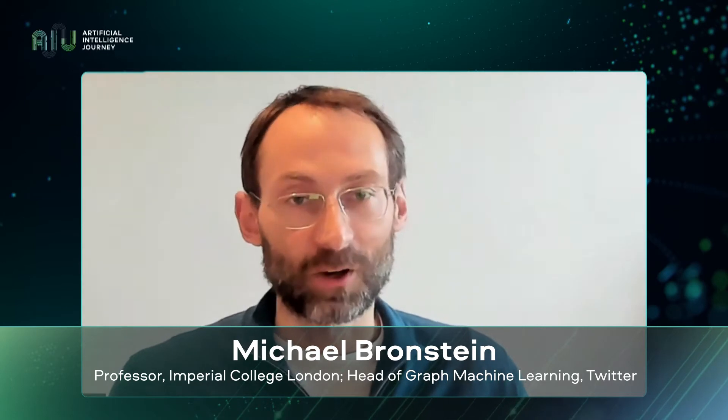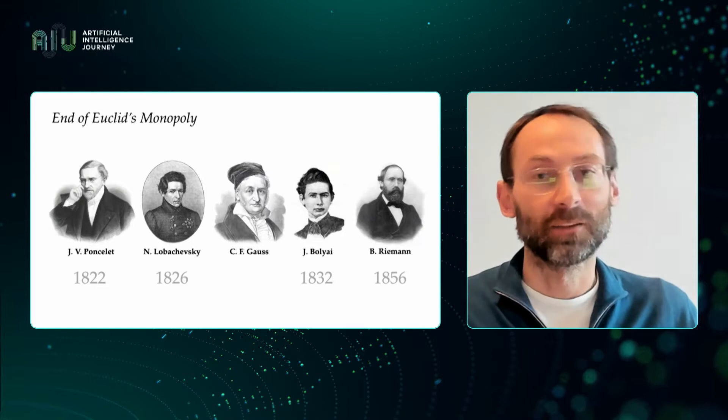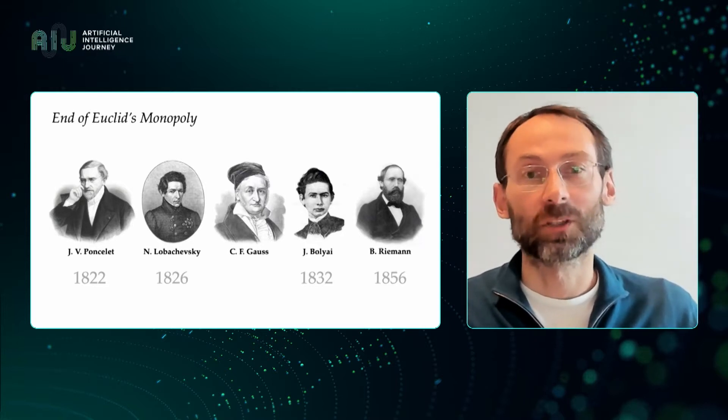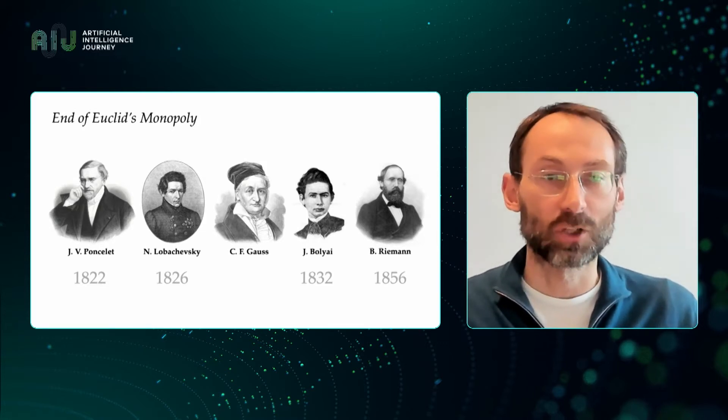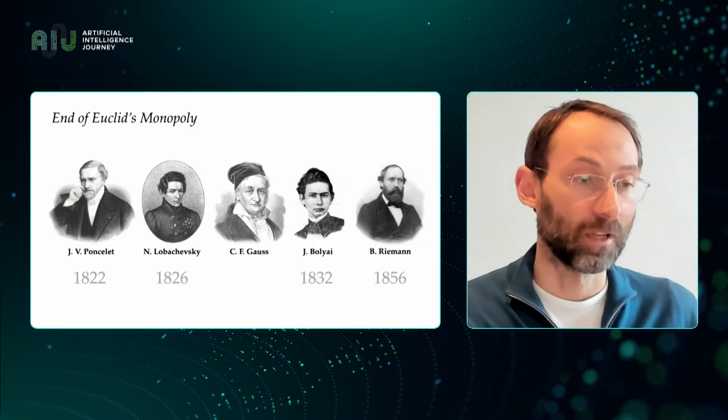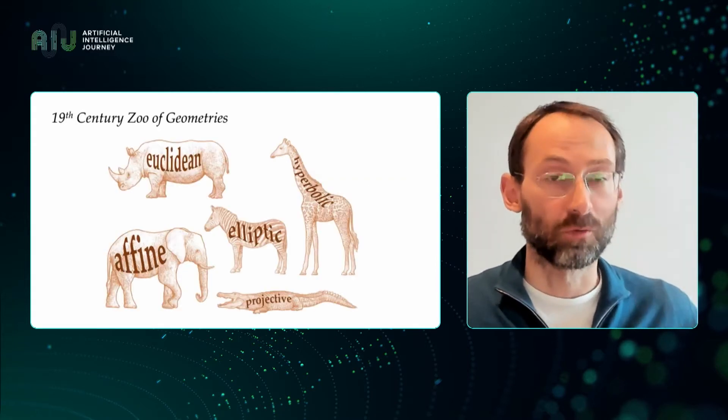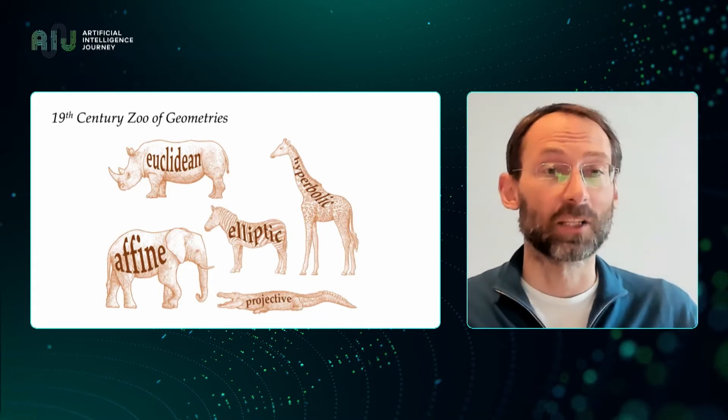It's fair to say that for nearly 2,000 years, the word geometry was synonymous with Euclidean geometry, simply because no other types of geometry existed. This Euclidean monopoly came to an end in the 19th century, when Lobachevsky, Bolyai, Gauss, Riemann, and others constructed the first examples of what we now call non-Euclidean geometries. Together with the development of other geometries, it created an entire zoo of different geometric properties towards the end of that century.